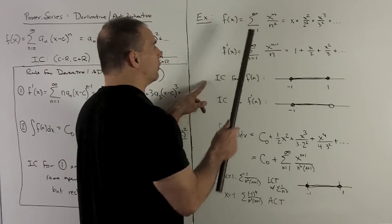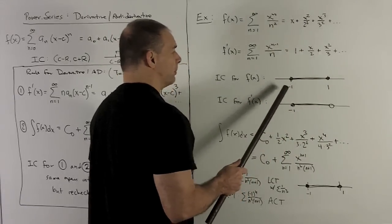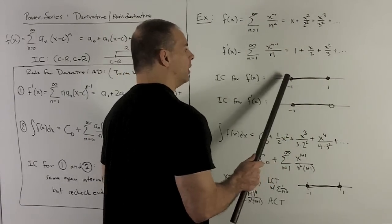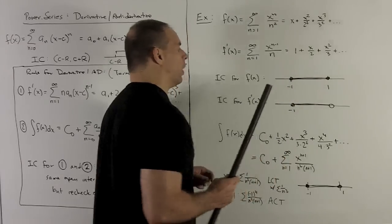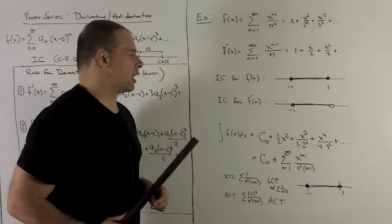Interval of convergence for the original function, we've worked this through before. It's going to be from minus one to one, and then we're going to include minus one and one.